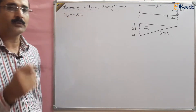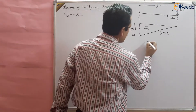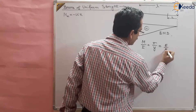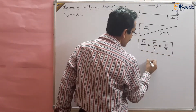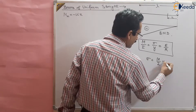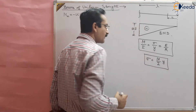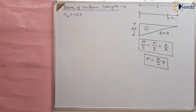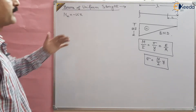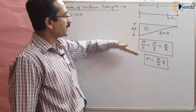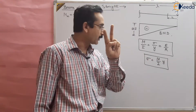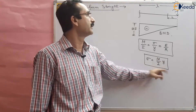In the bending equation, M/I = sigma/y = E/R. From this, sigma = (M/I) × y. We have to design this beam for maximum bending stresses — at the cross section where bending stress is maximum, considering the fiber (lower or upper) farthest from the neutral axis, where y is maximum. So we need to find M maximum and y maximum.